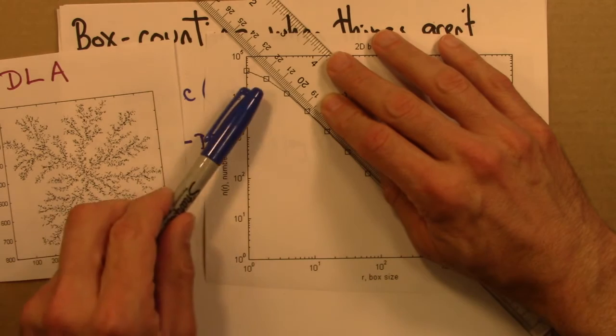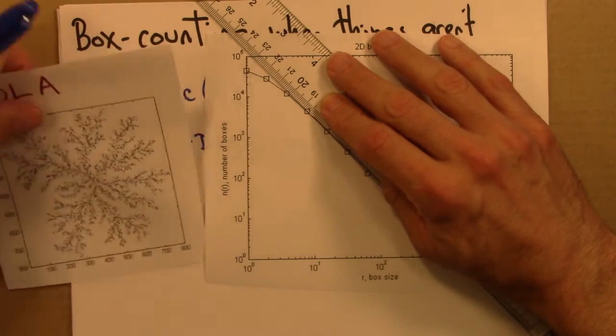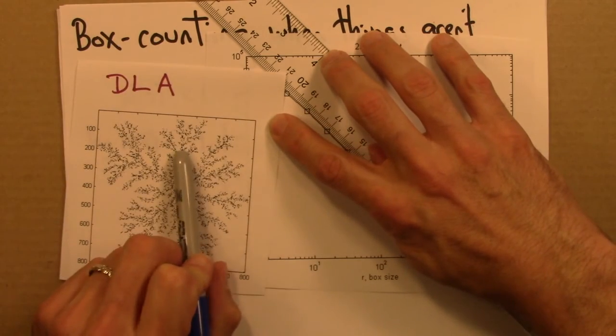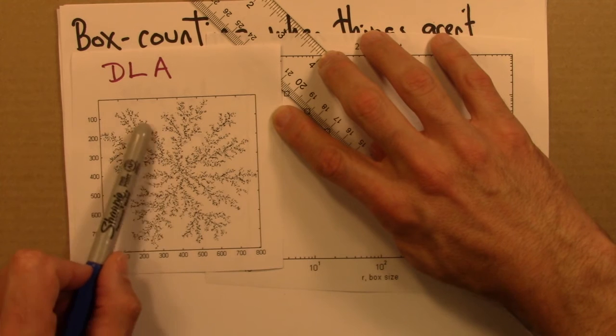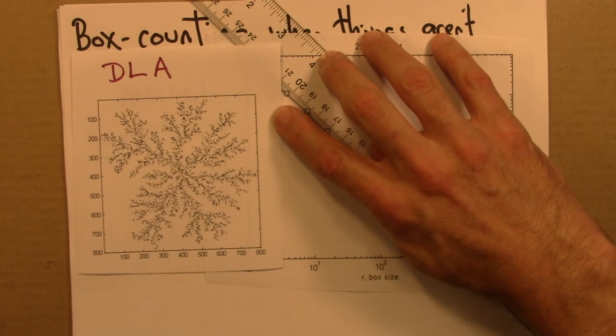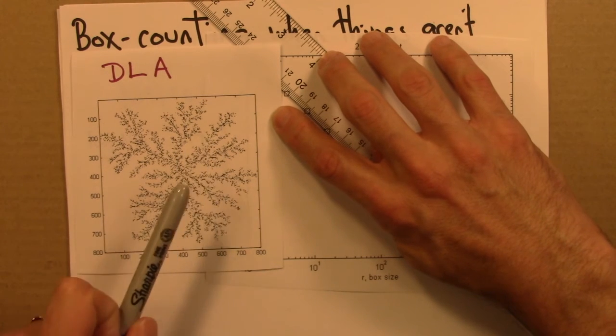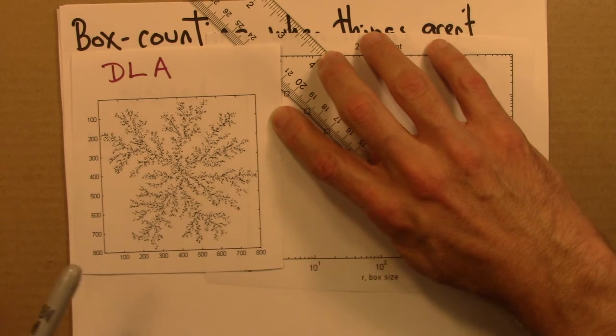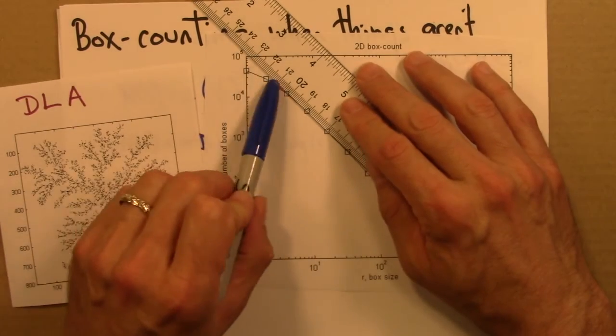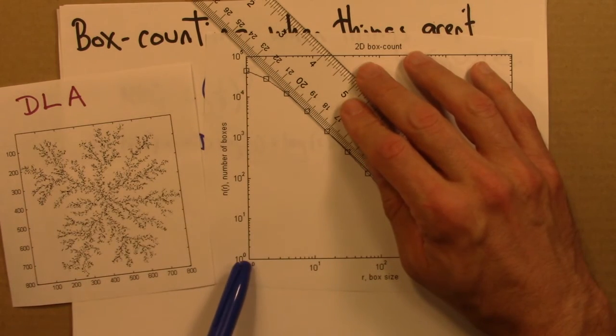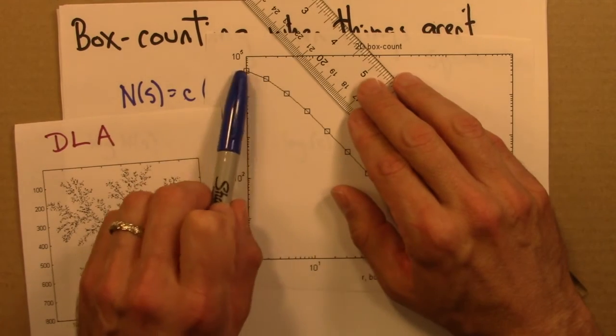Well, if you get the box sizes to be smaller still, in other words, smaller than the resolution of this picture itself, at some point, you're going to have the boxes so small that you have a point. Every point is in its own box. So making the boxes smaller isn't going to make the number of boxes needed to cover the shape any larger. Because you are basically running out of points.